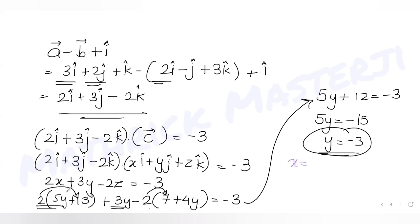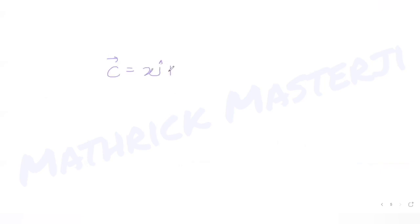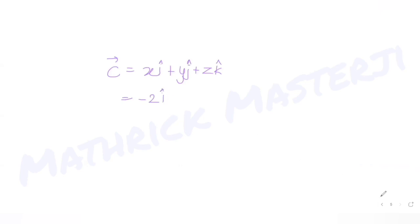With y = −3, we find x = 5(−3) + 13 = −15 + 13 = −2, and z = 7 + 4(−3) = 7 − 12 = −5. So the vector c = −2i − 3j − 5k.